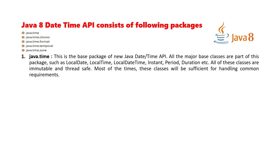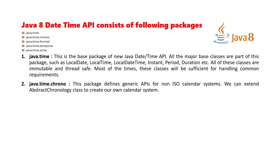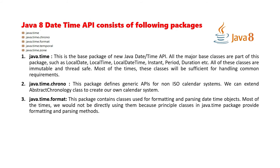These classes behave like the String class in Java in terms of immutability. Most of the time the java.time package classes are all you need. The next package, java.time.chrono, defines generic APIs for non-ISO calendar systems. You can extend the abstract Chronology class to create your own custom calendar system.